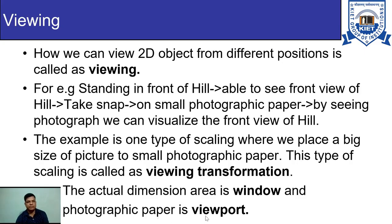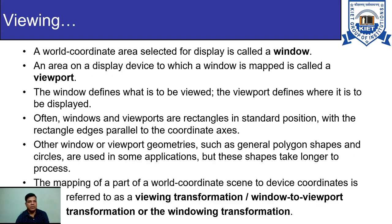A world coordinate area selected for display is called a window. An area on a display device to which a window is mapped is called a viewport. So we are mapping the window on world coordinates into a viewport on the display device. The window defines what is to be viewed, while the viewport defines where it is to be displayed. We also have to decide which portion of the viewport the picture occupies — for example, at the center or at the top right position.